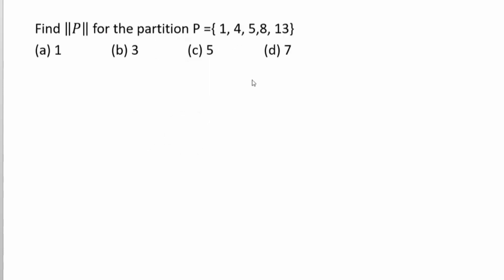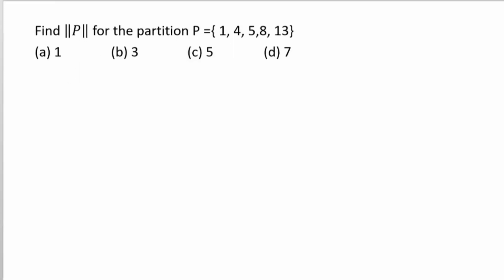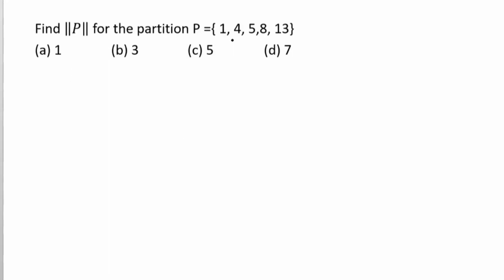The next question is: find the norm of partition P. Suppose you have an interval and the partition divides it. The norm of P is the maximum of the lengths. We just saw that delta x_r equals x_(r+1) minus x_r — that is the length.